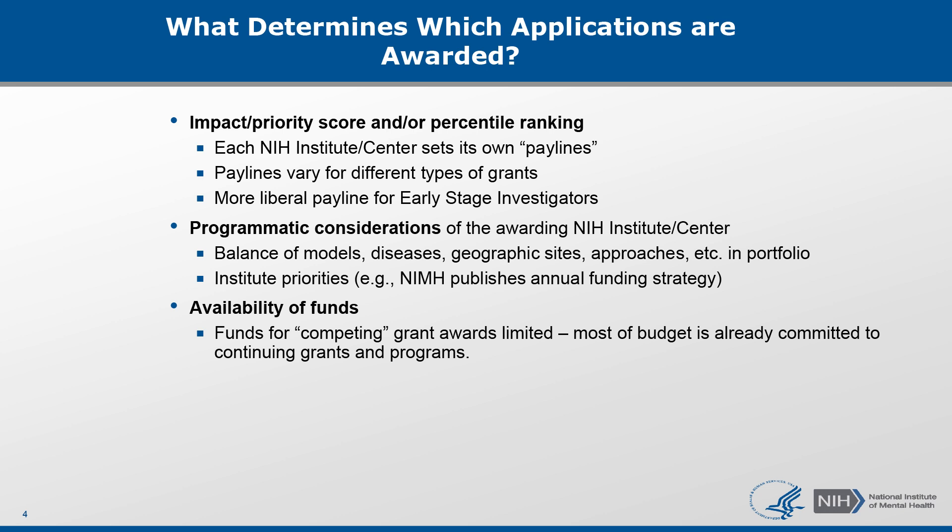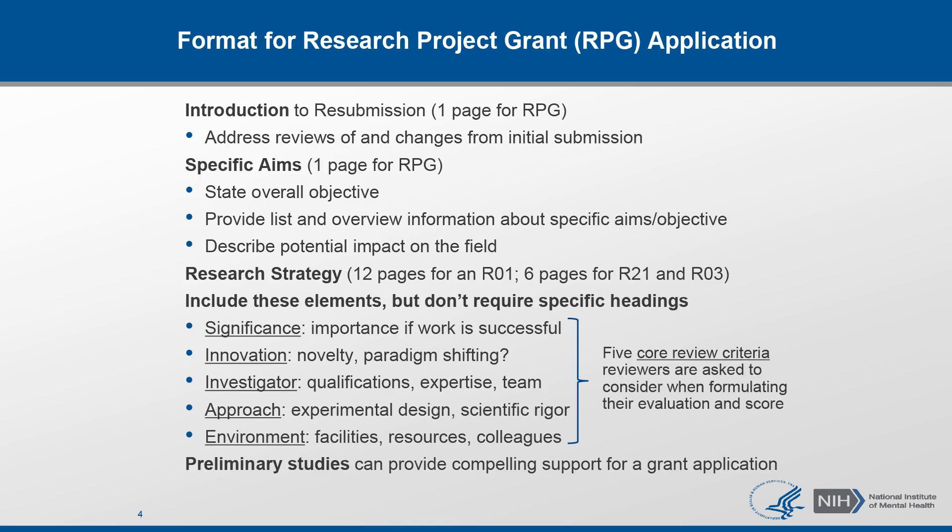The availability of funds also plays a role. For example, money might already be committed to ongoing projects or for certain requests for applications, so this may limit which funds are available to new applications. I will briefly go over the main sections of a research project application — not an exhaustive list, but the ones I think are important for you to be aware of.